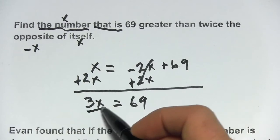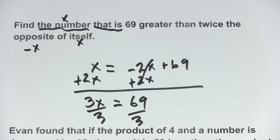Over here we get 3x and this just goes away. So we get 3x equals 69. We just divide by 3 to get x equals 23.